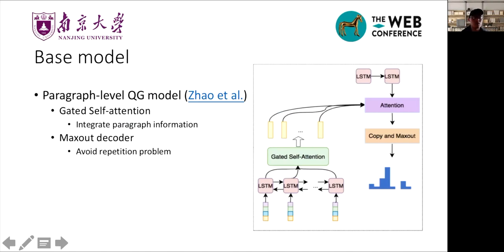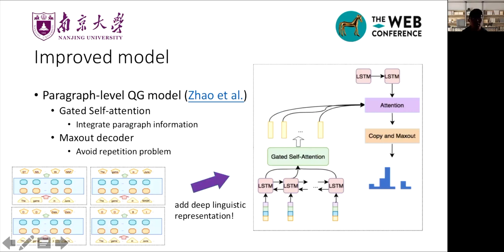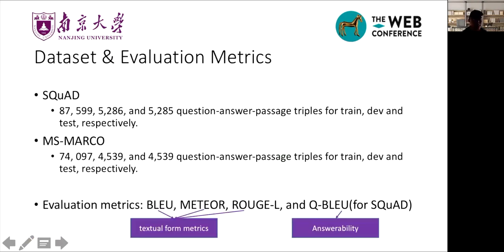The gated self-attention is used to integrate paragraph information and the maxout decoder is used to avoid repetition problems. We add the contextual word embedding, the POS, NER, and QAF deep linguistic representation to the base model. We do experiments on two commonly used datasets, SQuAD and MS Marco. We also employ BLEU, METEOR, ROUGE-L, and QBLEU as our evaluation metrics. QBLEU is used to measure the question's answerability on SQuAD.